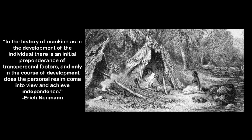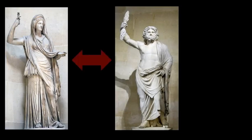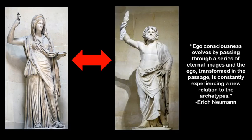Consciousness first begins to emerge when the person recognizes their own existence, and this first occurs when several archetypes in the mind come into conflict with each other, resulting in a psychological transformation. As Neumann writes, ego consciousness evolves by passing through a series of eternal images, and the ego, transformed in the passage, is constantly experiencing a new relation to the archetypes.